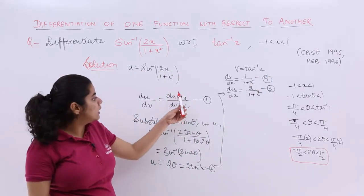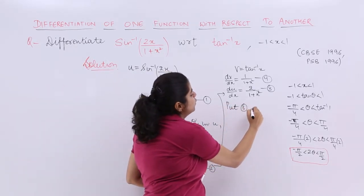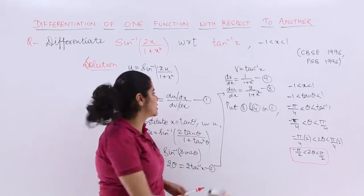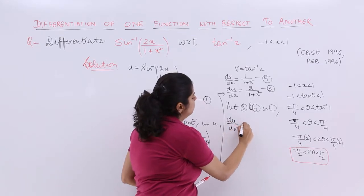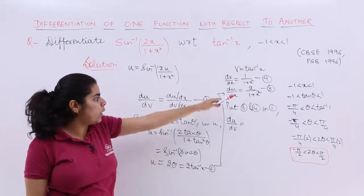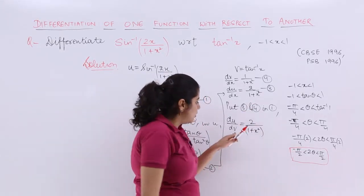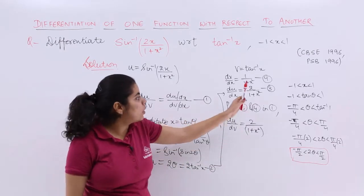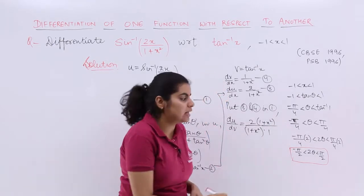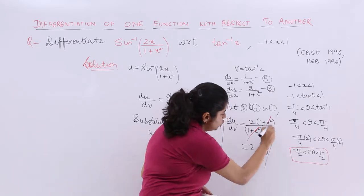Now putting the values of 3 and 4 in equation number 1. Put 3 and 4 in 1. I have my final answer, which is du by dv. du by dv is equal to du upon dx upon dv upon dx. 1 plus x square cancels. So my answer is 2.